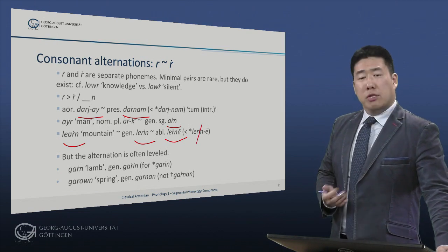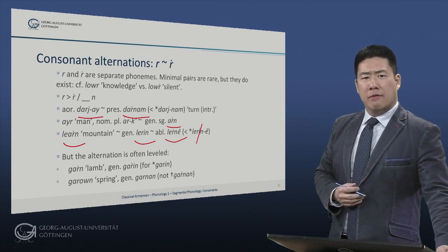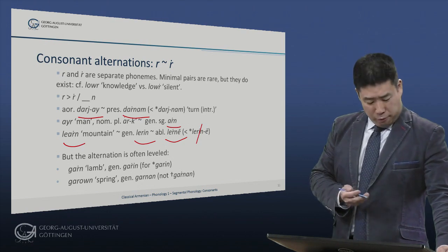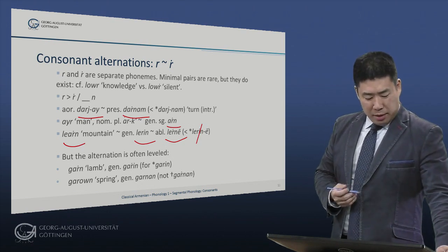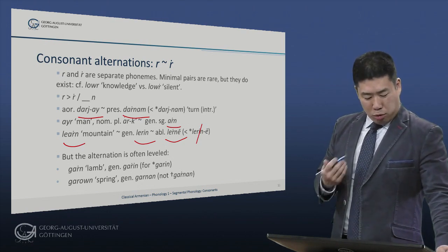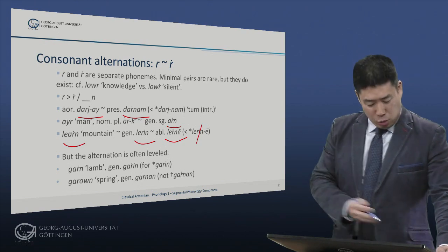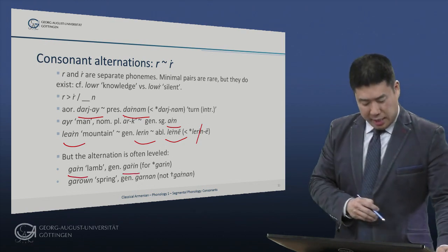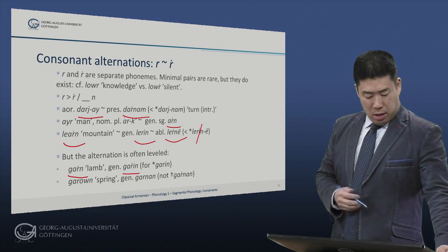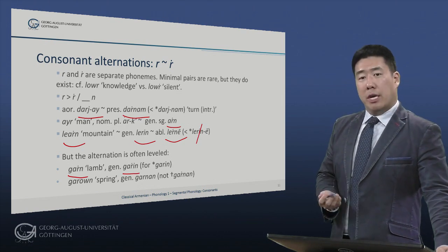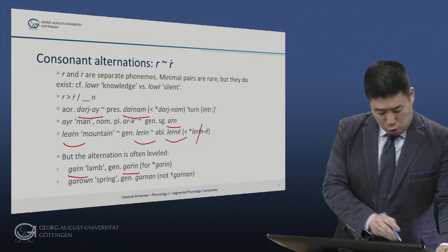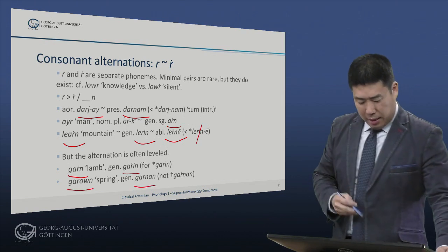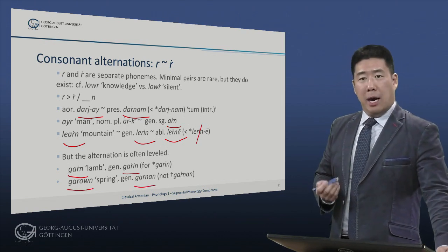So this produces many alternations between the two kinds of Rs, but the alternation is often leveled. For example, in the word for lamb, the rolled or trilled R has been generalized: we have 'garn', and genitive 'garin', not 'garin'. Conversely, in a word such as 'spring', 'garun', the genitive is 'garnan', not what we would expect, 'garnan'.